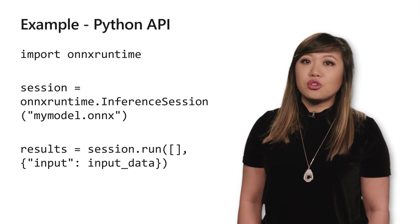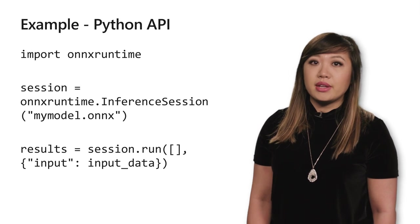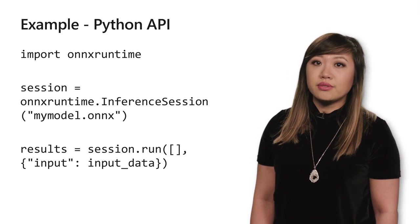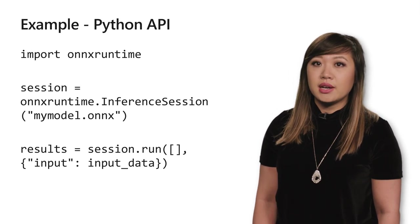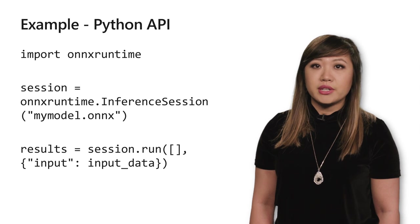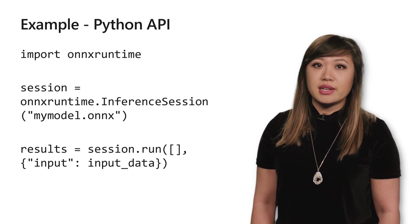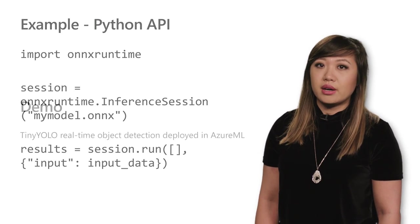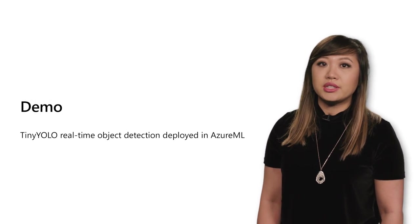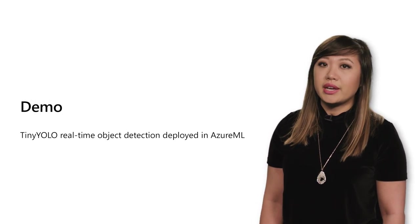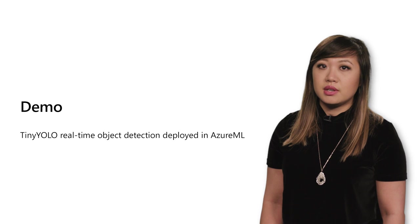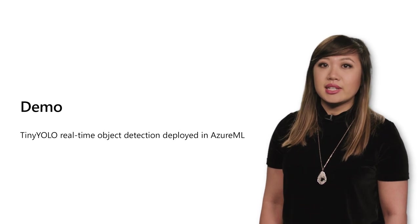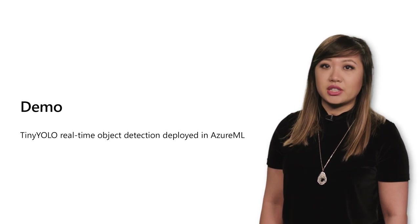You can integrate ONNX Runtime into your code directly from source or pre-compiled binaries, but one simple and popular way to operationalize this is through Azure ML to deploy a service for your application to call. Let's see this end-to-end in action.